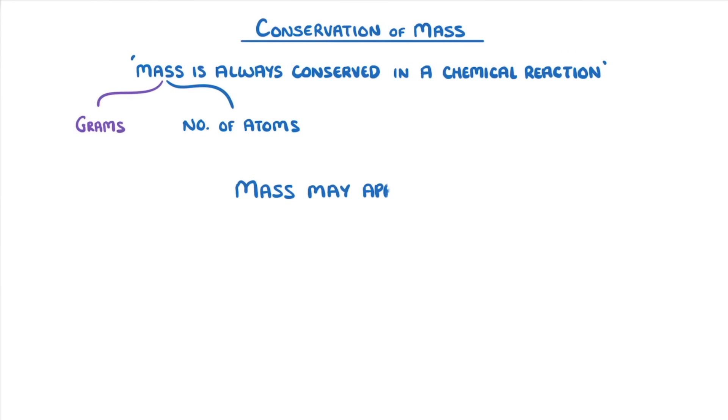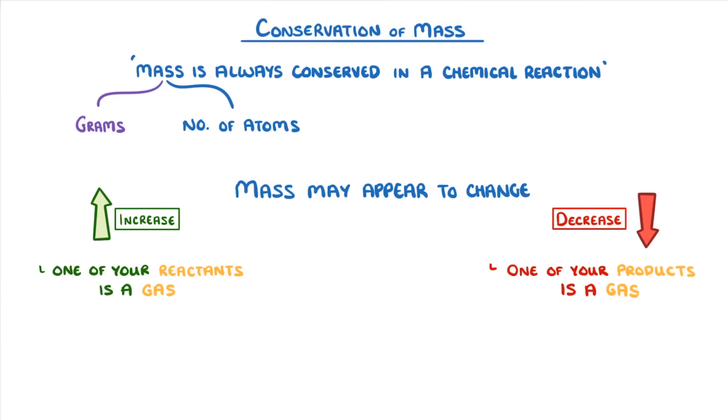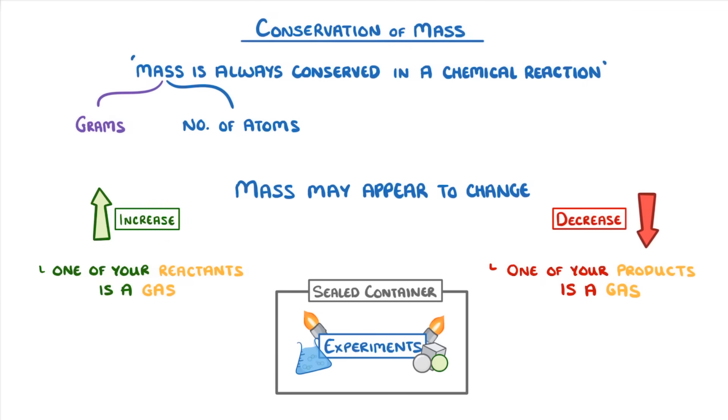Sometimes though, the mass may appear to change. If the mass seems to increase, it's probably because one of your reactants is a gas, while if the mass decreases, it's probably because one of your products is a gas. And finally, to avoid this issue, all we need to do is do our experiments in a sealed container.